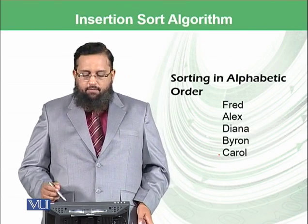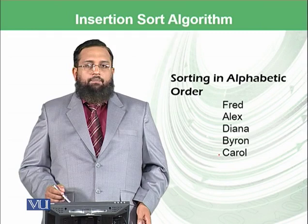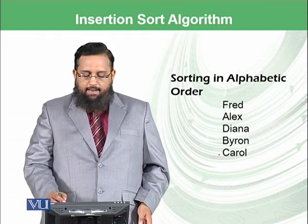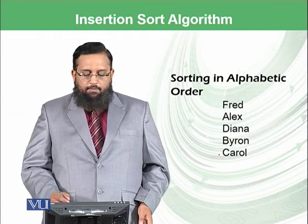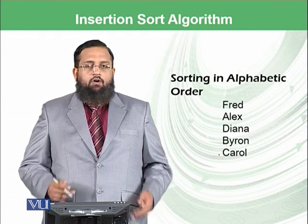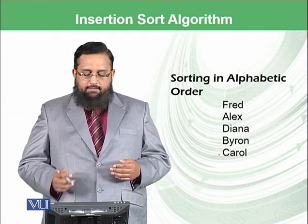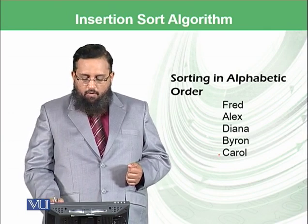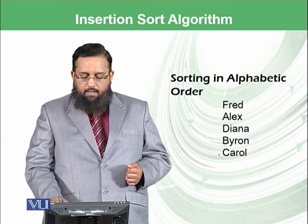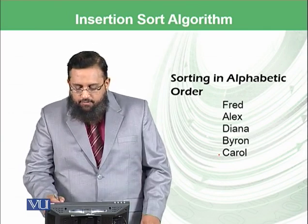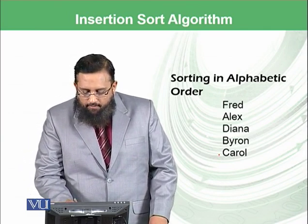We have these five names: Fred, Alex, Diana, Byron, and Carol. We want to sort them so that Alex comes on top, then Byron, then Carol. It should be sorted in ascending alphabetical order — this is basically the requirement.